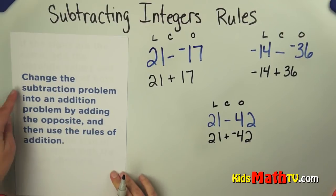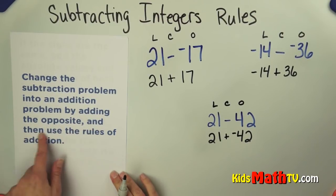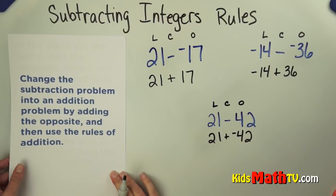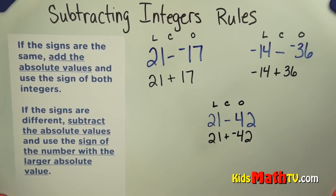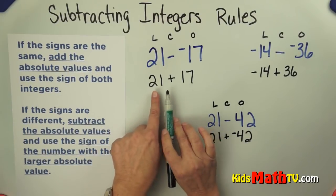We've changed it into an addition problem and now we need to use the rules of addition. We go back to our rule for adding integers and look at the signs. Are the signs the same or different?